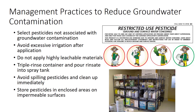There are several management practices to reduce the potential for groundwater contamination by pesticides. Whenever possible, select pesticides that have not been associated with groundwater contamination. Avoid excessive irrigation after an application and prevent irrigation runoff. In sandy soils and locations where groundwater contamination is known to occur, do not apply highly leachable materials. Triple rinse containers, pour rinsate into the spray tank, and use the rinsate to treat a labeled site. Avoid spilling pesticides. If a spill occurs, clean it up immediately and remove contaminated soil. Dispose of contaminated soil as hazardous waste. Never dump excess pesticides into the soil or into water sources. Use proper methods of handling, storage, mixing, and loading. Store pesticides in enclosed areas on impermeable surfaces.